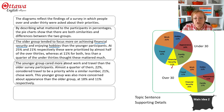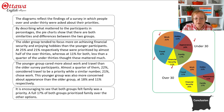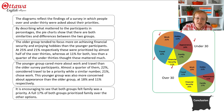And you're going to make sure you've mentioned each of the categories — so we're adding work, travel, and appearance. Now you're ready for your conclusion. We've got one category left that we haven't mentioned, which is family, so we pull that into our concluding remarks: it's encouraging to see that both groups felt family was a priority — a full 17% of both groups prioritized family over the other options. That takes care of your conclusion and the last of your categories.